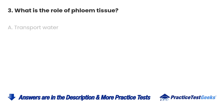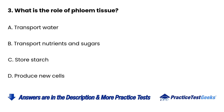Question 3: What is the role of phloem tissue? a. To transport water. b. To transport nutrients and sugars. c. To store starch. d. To produce new cells.